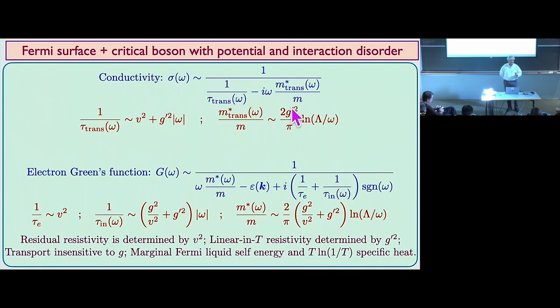That's really it. You calculate in the theory with a random G-prime: G cancels out in the transport but G-prime doesn't. Perturbatively this can be seen explicitly, and that's what's in the recent paper I mentioned at the beginning of my talk.